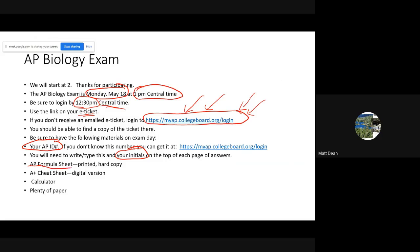Some other things you'll need on exam day are the AP formula sheet — I'd recommend a printed hard copy — and the A Plus cheat sheet, which is a PDF file with a lot of pages but is all hyperlinked. I'd recommend using a digital version of the A Plus cheat sheet. Even though they've said there won't be any complicated calculations on the AP Bio exam this year, I'd still have a calculator handy and a stack of a few sheets of scratch paper just in case.